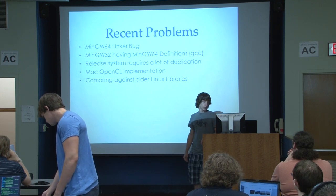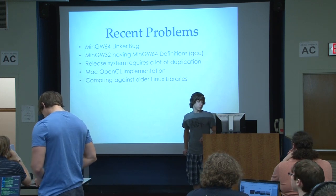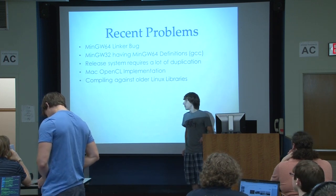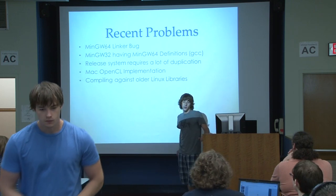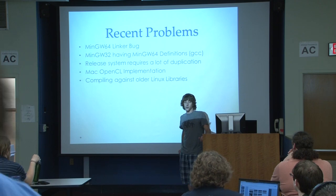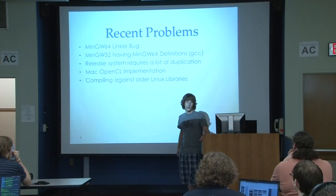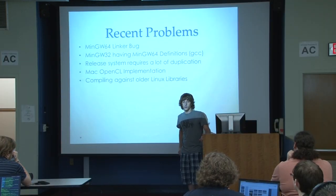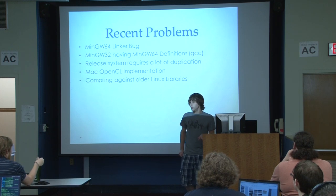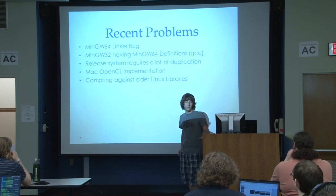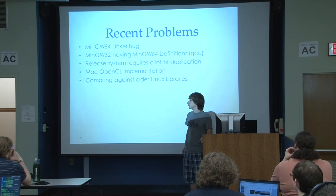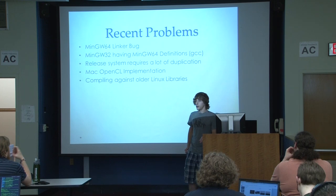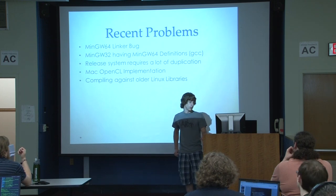Some recent problems we've run into: when filing for Windows, NGW64 has a linker issue which made it difficult to link our OpenCL applications. A workaround we found was to use the pre-compiled libraries — the wrapper for OpenCL — and then it was able to link properly.